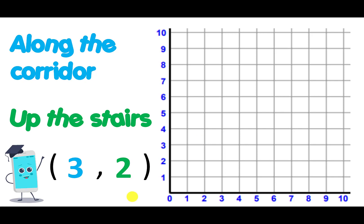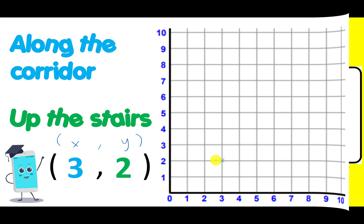Let's have a look if we swap the digits round. If the 3 was first, we still move along the corridor, then up the stairs, because coordinates are always in a bracket where the first digit is x and the second digit is y. So we move along to 3, and then we move up to 2. So if you just remember along the corridor, then up the stairs, and move in the directions that are in the brackets, you will get to your coordinate point.